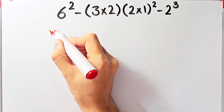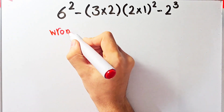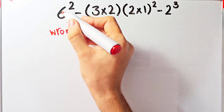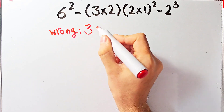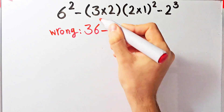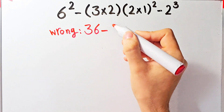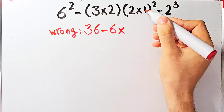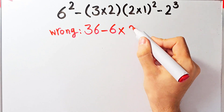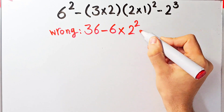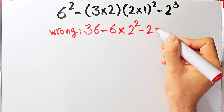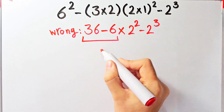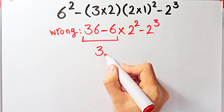For example, some people solve this question like this: six to the power of two equals thirty-six, thirty-six minus three times two which equals six, after that multiplied by two times one which equals two, to the power of two, minus two to the power of three.